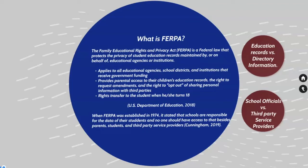Under this act, parents are provided with the right to access their children's education records. Parents have a right to request to have those records amended or withheld from certain entities if they deem necessary. They can do so by signing an opt-out form at enrollment. These rights transfer to the student when he or she turns 18.